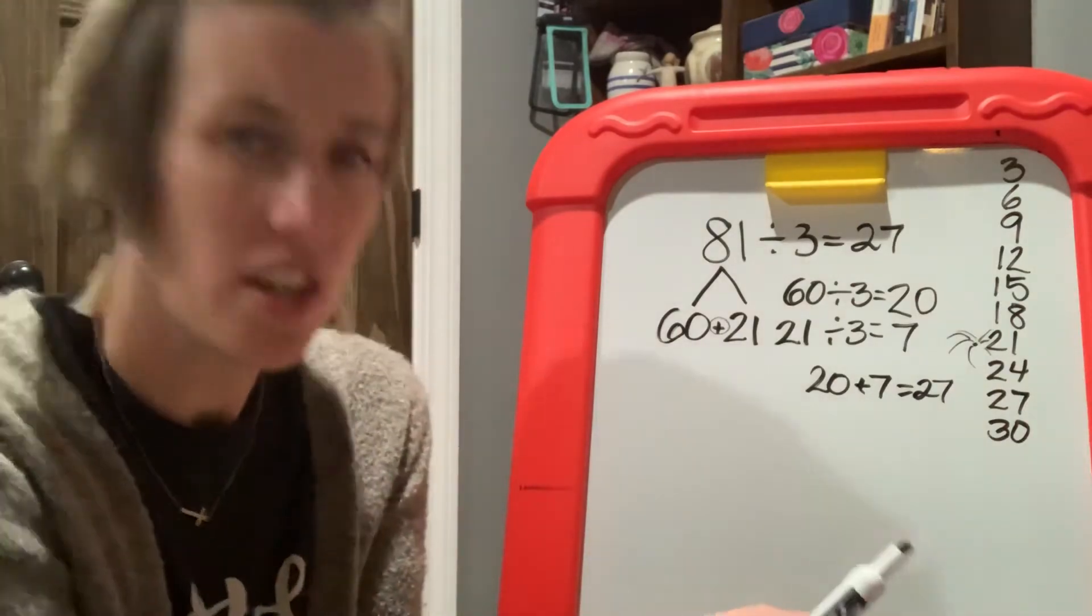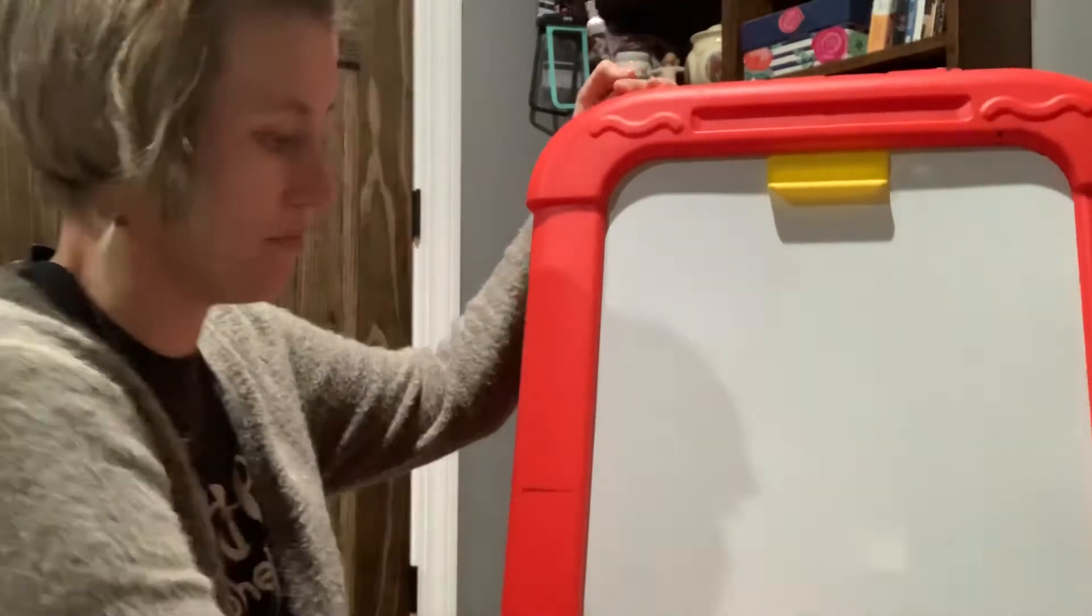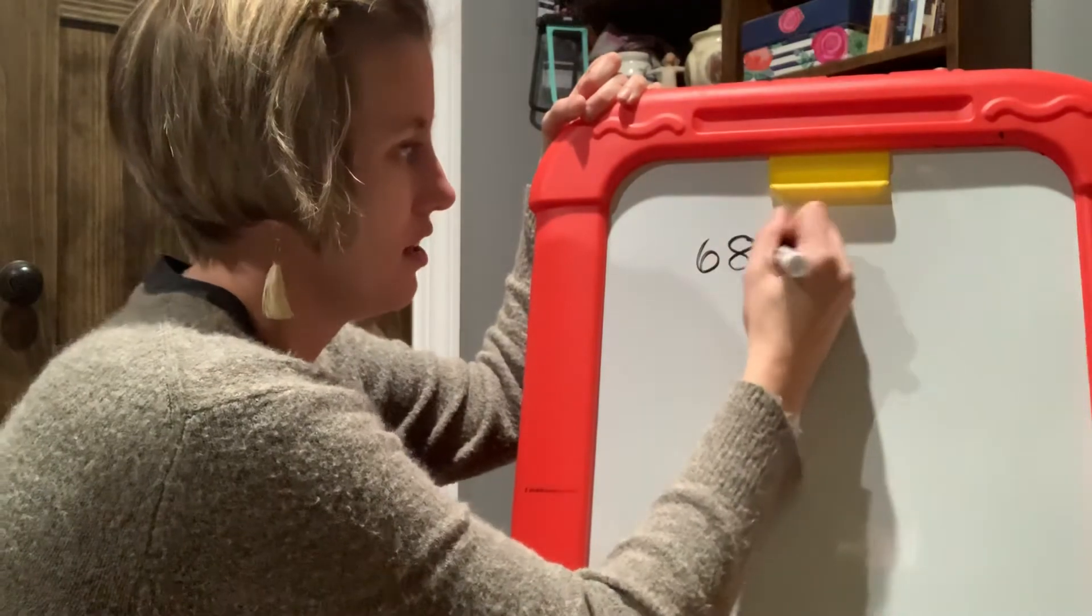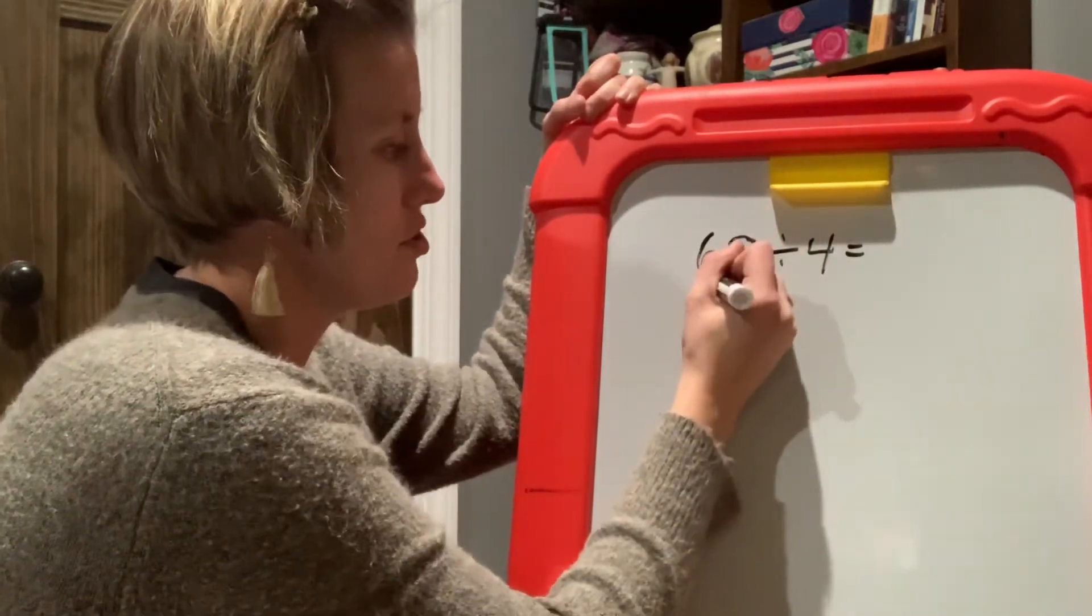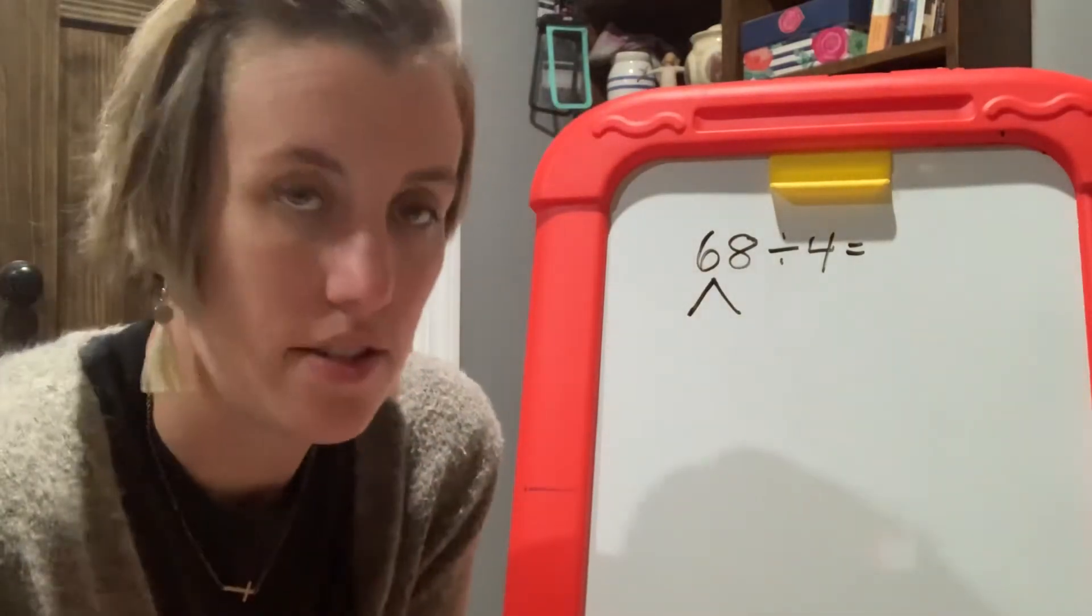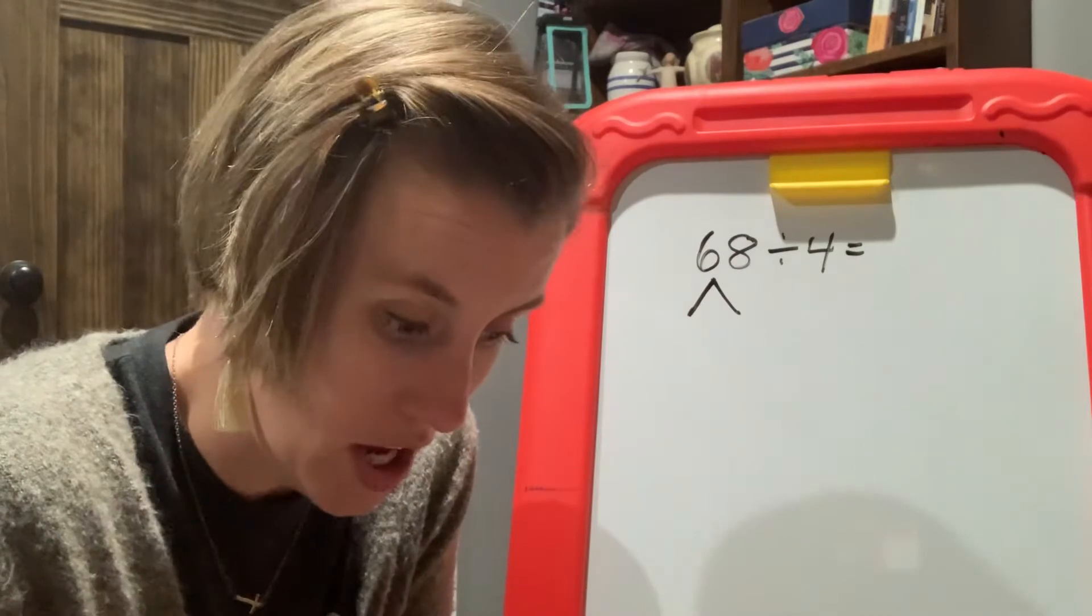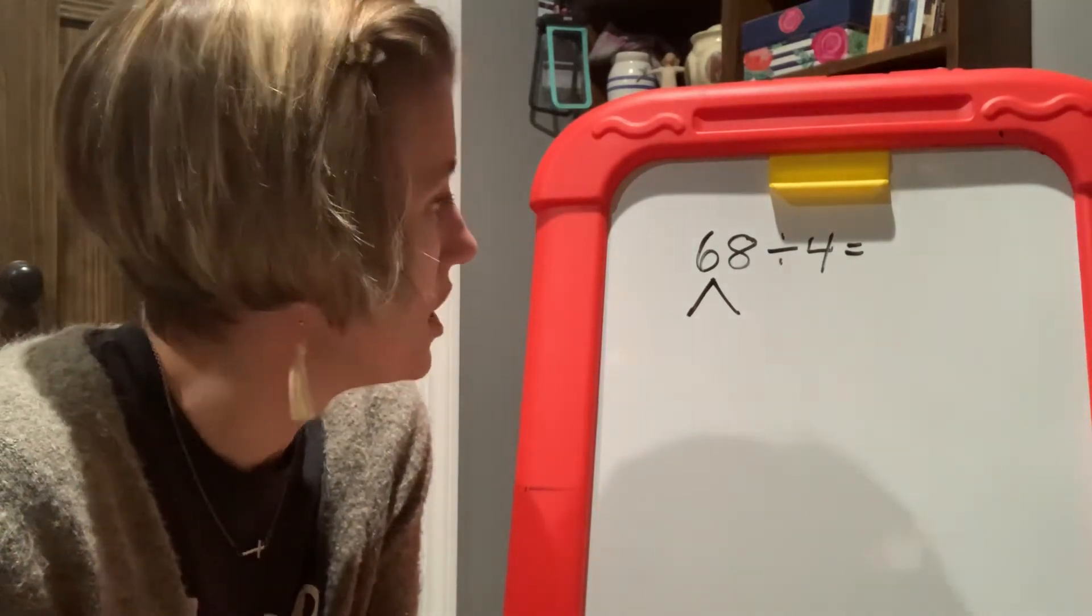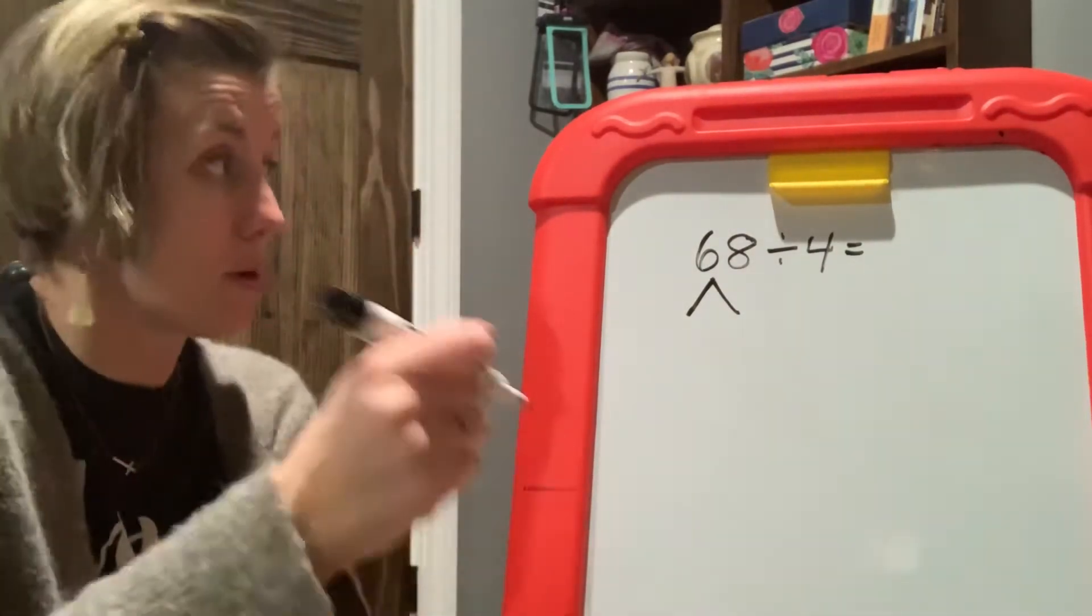listing of multiples and the distributed property. Who wants to do one more? Yeah, I want to do one more. I hear you. I know you're excited. I'm excited too. Here we go. How about let's do 68 divided by four. How are we going to distribute 68 divided by four?